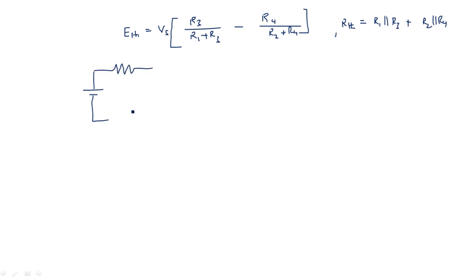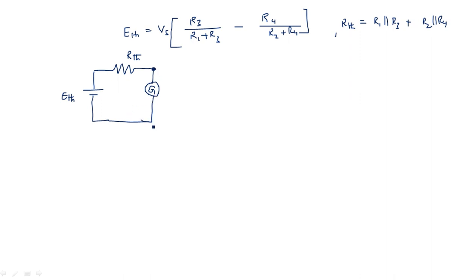The Thevenin's equivalent circuit consists of the Thevenin's voltage ETH in series with the Thevenin's resistance RTH. Here is the place where we connect the load — that is, the galvanometer, which we had open-circuited earlier, is now connected back here.